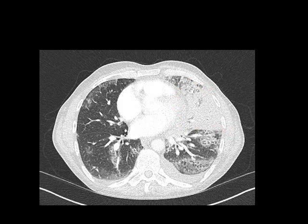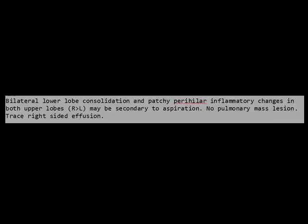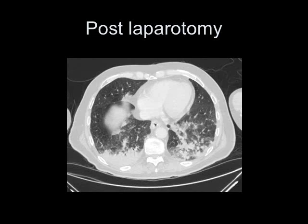Here's a patient with status epilepticus on a ventilator. I would certainly say this was an area of atelectasis — the volume seems to be lost. I would also call this atelectasis because of the position of the abnormality and the clustered nature of the air bronchograms, though I'm not a hundred percent sure. The report says 'bilateral lower lobe consolidation,' which I really don't think is correct — those are more in keeping with atelectatic changes.